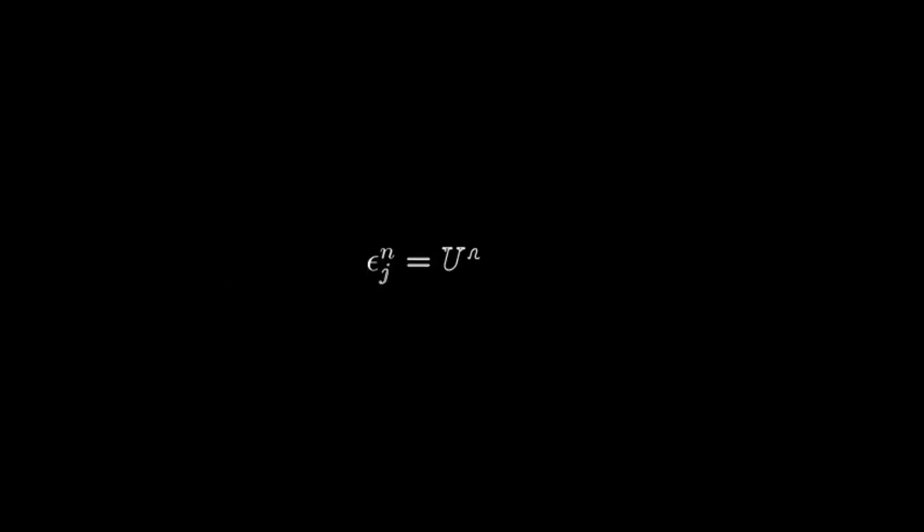We define epsilon as the difference between numerical and analytical solutions, which in turn gives the following equation. This means error follows the dynamics of the PDE. We shall cross-check this assumption later. Writing U in spectral space gives the following equation.